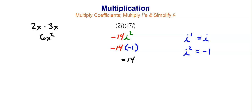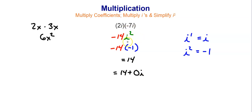If I want to write that in standard form, it would be 14 plus 0i, since we don't have an imaginary portion. So it's just like Algebra 1, except we have to worry about simplifying i when there's a power greater than 1 on it.